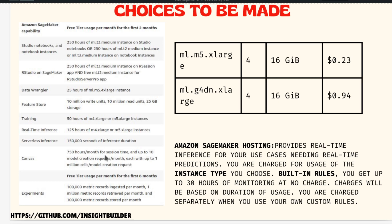Once you sign into AWS after the signup process, set up a budget for your billing and keep your AWS keys and secrets extremely safe. Don't commit them to a GitHub repo or anything like that — that will be very detrimental for your account.